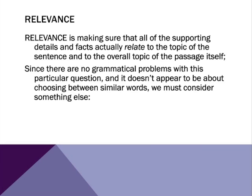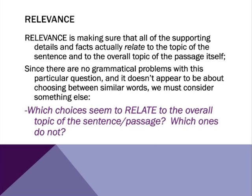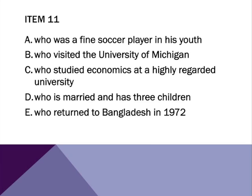Since we notice right away the issue does not seem to be grammatical, that removes us from thinking about usage or mechanics. So in this case, we look at the answer choices, and we should start thinking about — since they appear to be very different — which ones do actually relate to the topic of the passage, and which ones don't. It's really a discussion of thinking that this particular information may not necessarily be needed in the passage, but certainly we don't want it to hurt the information in the passage. So we need to look for information that really seems to connect to something.